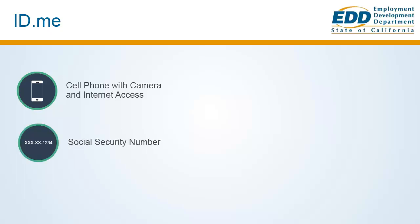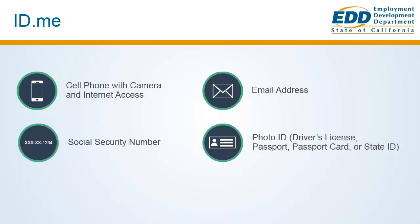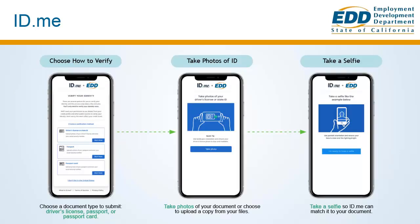You need your social security number, email address, and a photo ID such as a driver's license, passport, passport card, or state ID. Be ready to upload a photo ID and take a picture of yourself using your cell phone. If you don't have an ID.me account, you can create one when you start filing your claim.